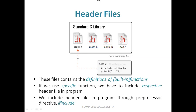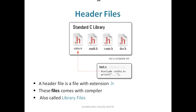The stdio.h contains one set of functions. math.h contains a different set of functions. conio.h contains a different set of functions. A header file is a file which has the extension .h and these files come with a compiler. When you install the compiler on your computer, this piece of code will already be present with that compiler. These header files are also called library files.